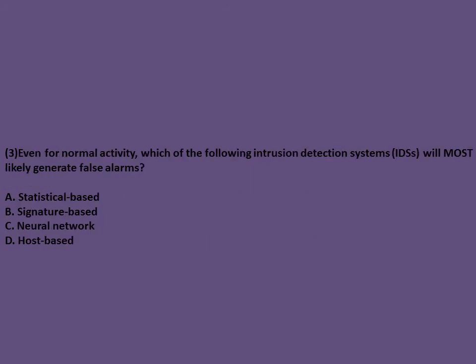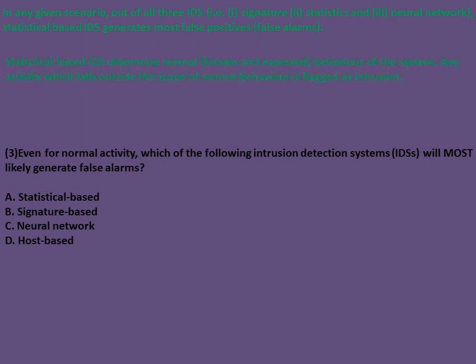Exam question: Even for normal activity, which intrusion detection system will most likely generate false alarms? In any given scenario, out of all three IDS types, statistical-based IDS generates the most false positives. Statistical-based IDS determines normal behavior of the system, and any activity outside the scope of normal behavior is flagged as intrusion. Anything outside the normal scope will be considered intrusion activity.